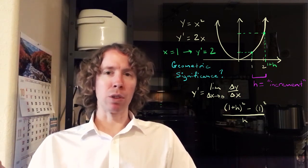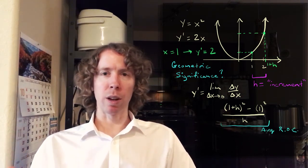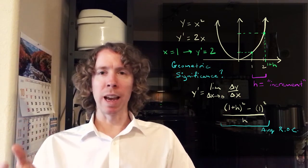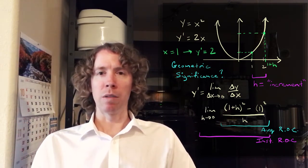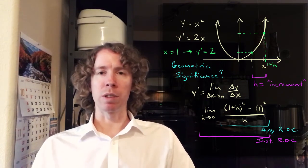To get, so that gives an average rate of change to get the instantaneous rate of change. We let the H go to zero. So we're going to write that as the limit as H goes to zero, the difference in the Y values or the difference in the X values.